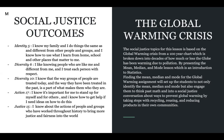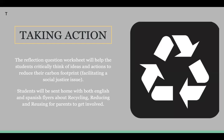And on to the global warming crisis. The social justice topic for this lesson is based on the global warming crisis from a 100-year chart, broken down into decades showing how much the globe has been warming due to pollution. By presenting the mean, median, and mode lesson — which is an introduction to statistics — students will not only identify the mean, median, and mode, but also engage in a social justice conversation about ways to prevent global warming by taking steps with recycling, reusing, and reducing products in their own communities. The reflection question worksheet will help the student critically think of ideas and actions to reduce their carbon footprint. The student will be sent home with both English and Spanish flyers about recycling, reducing, and reusing for parents to get involved.